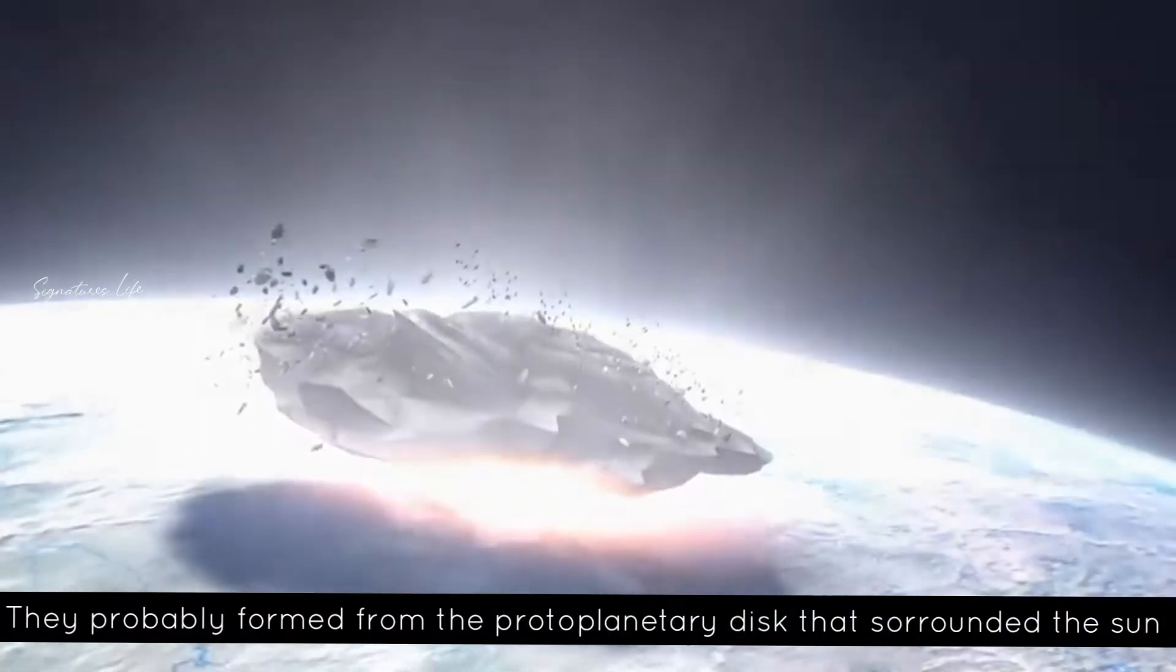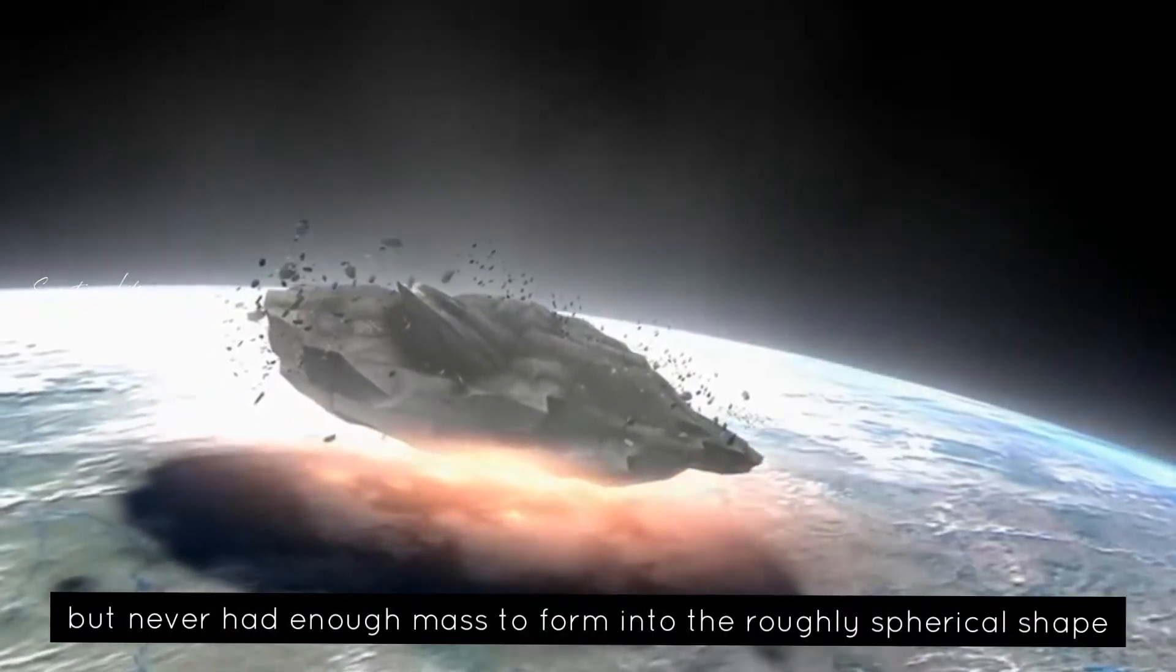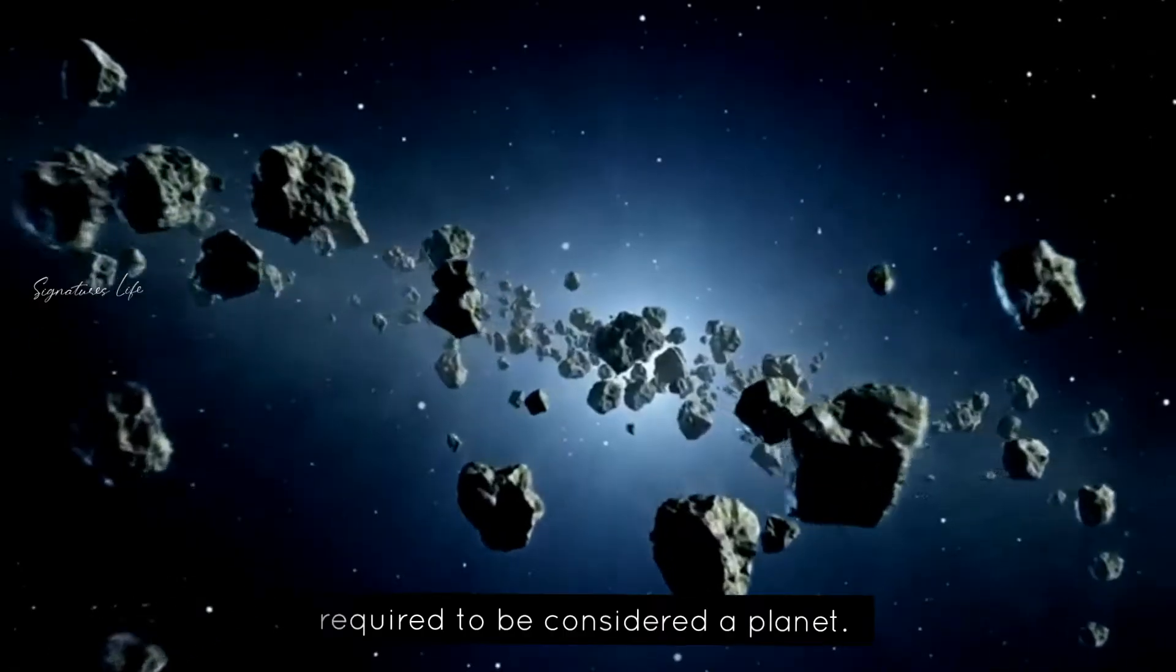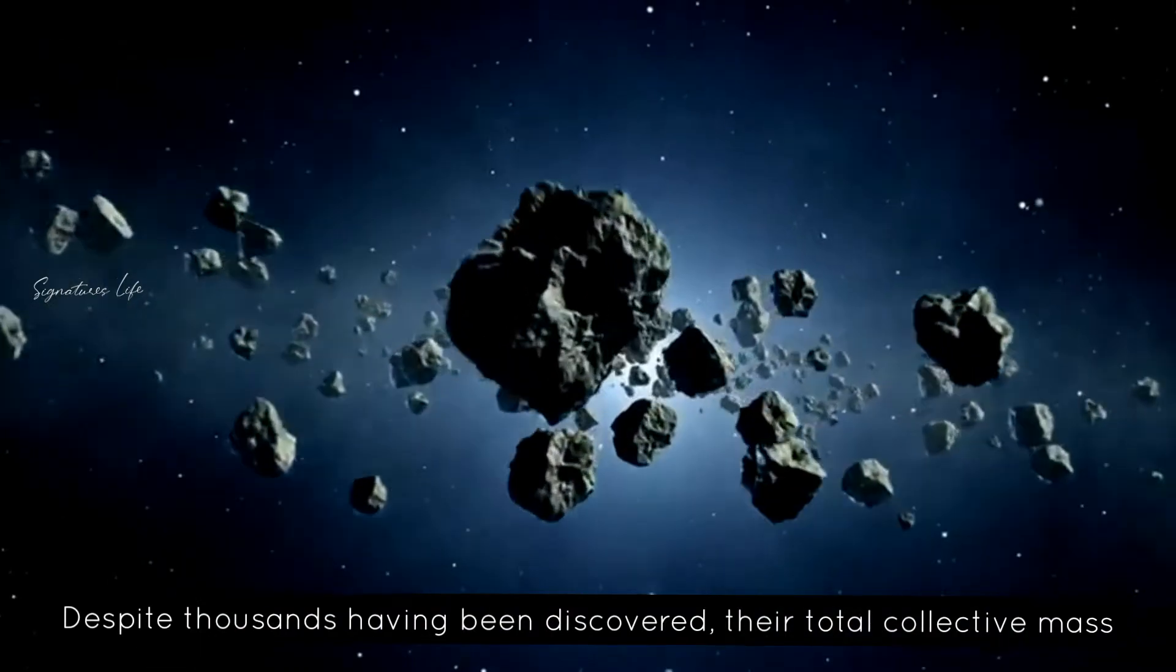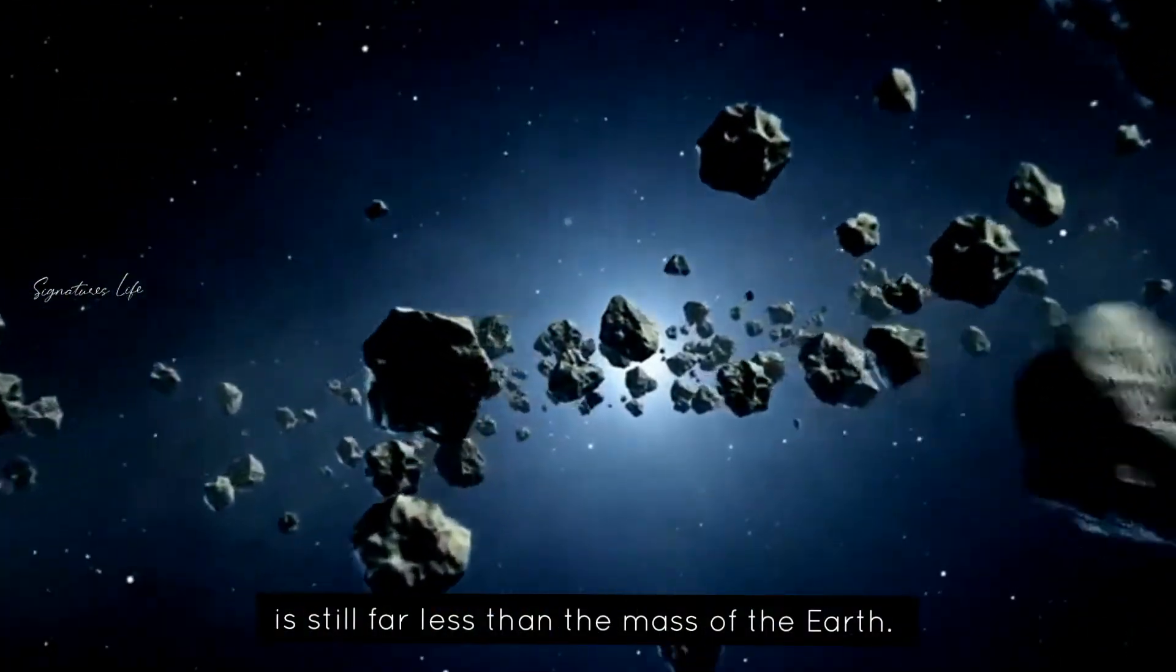They probably formed from the protoplanetary disk that surrounded the Sun but never had enough mass to form into the roughly spherical shape required to be considered a planet. Despite thousands having been discovered, their total collective mass is still far less than the mass of the Earth.